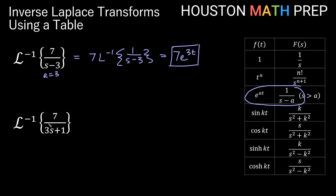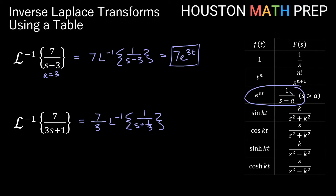For 7 over 3s plus 1, this uses the same exponential formula but we don't have just a single s in front. So we need to factor out not only the 7 but also the 3 from the denominator to get the form 1 over s minus a. Bumping the 7 out and factoring a 3 from the bottom, we get 7 over 3 times the inverse transform of 1 over s plus 1 third. Here a is negative 1 third, so we get 7 thirds times e to the negative t over 3.